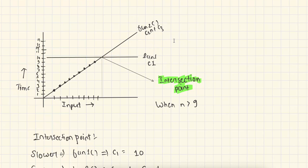Now you can see that it doesn't depend on which programming language the algorithm is written in or on which machine the programs are running. Order of growth gives us a clear picture. Generally we do not care about small inputs in order of growth, because if the input is smaller, even an inefficient program works well. In the real world, we focus on larger input sizes. So let's discuss the intersection point — there will be a point in the future where both functions cross each other, and that converging point is called the intersection point.